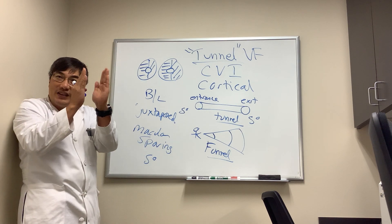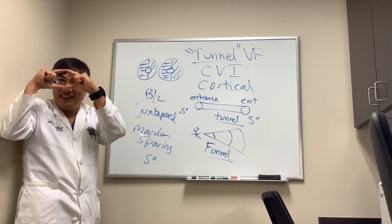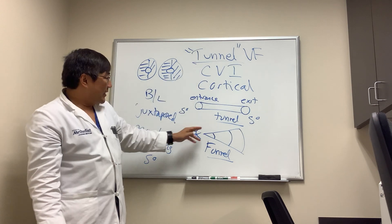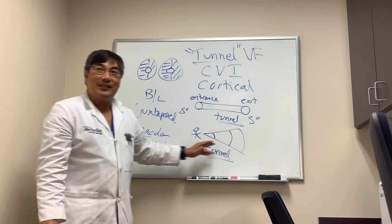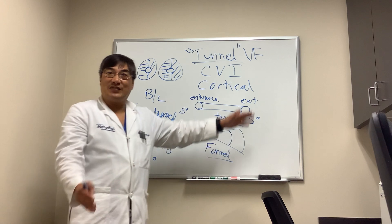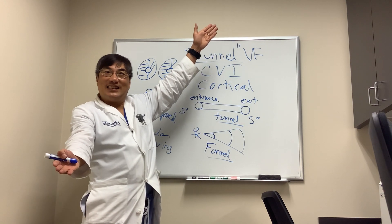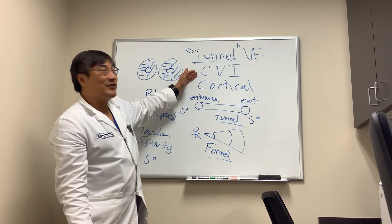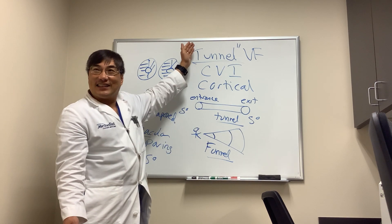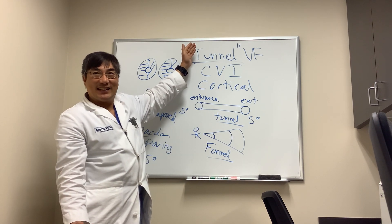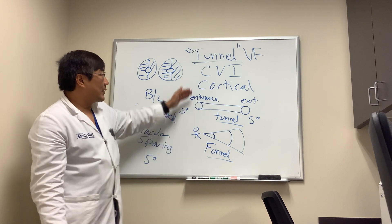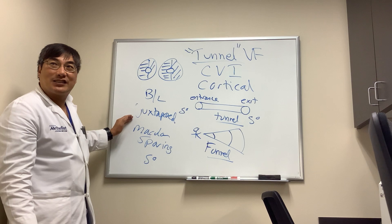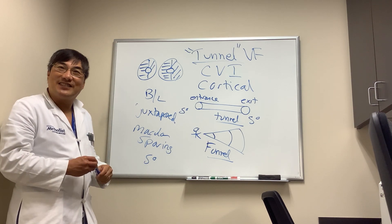Juxtaposed homonymous hemianopsias with macular sparing — it'll look like this. But it won't be a tunnel, because if you test the person at 1 meter and 2 meters, their 5-degree field will expand to a 10-degree field at double the distance. It's a funnel field in cortical visual impairment, not a tunnel field, which is non-organic. A funnel field from cortical visual impairment occurs from bilateral, juxtaposed, macular sparing, homonymous hemianopsias.